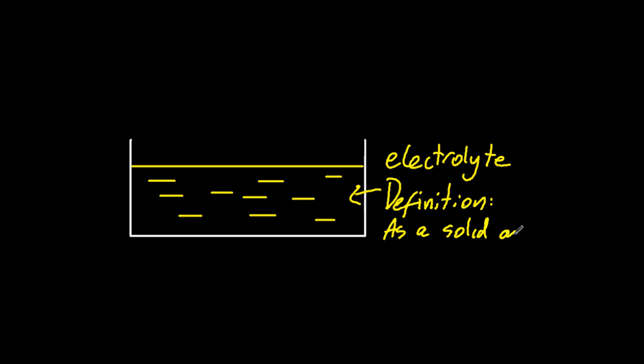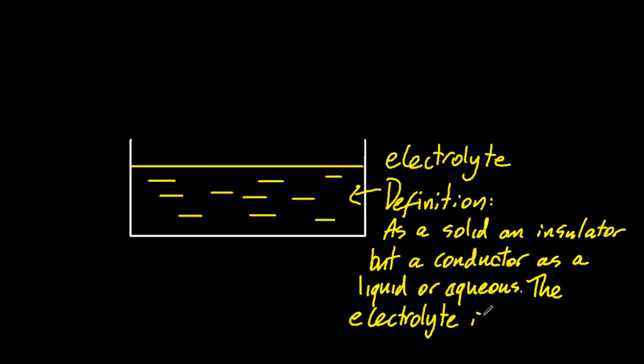Definition of an electrolyte: as a solid, it's an insulator, and it's a conductor as a liquid or aqueous. And the second part of that is that the electrolyte is decomposed by electricity.